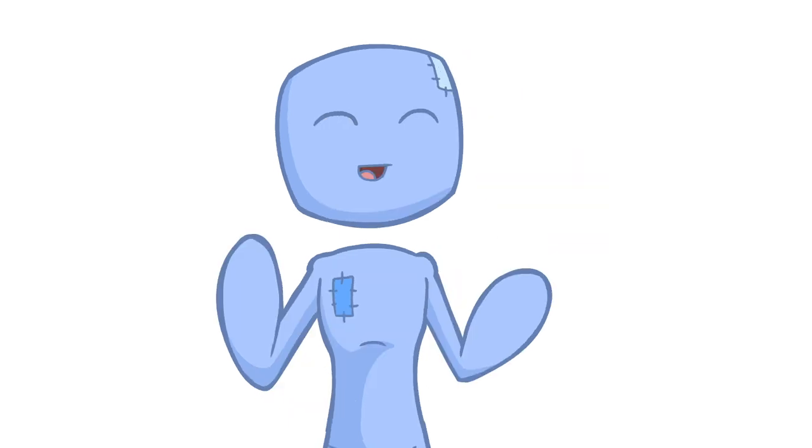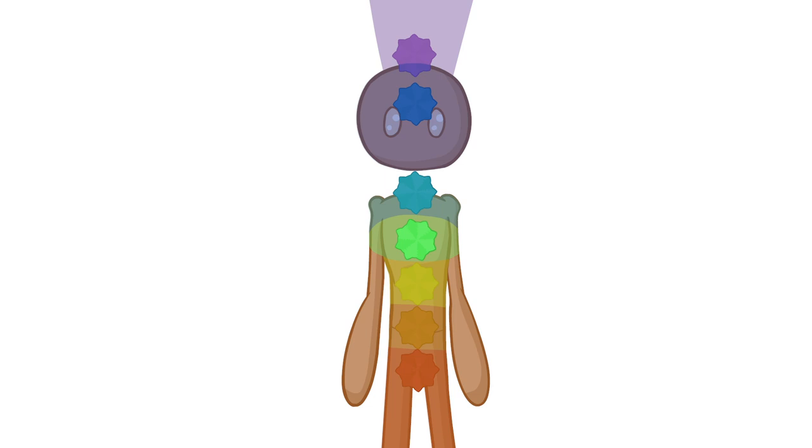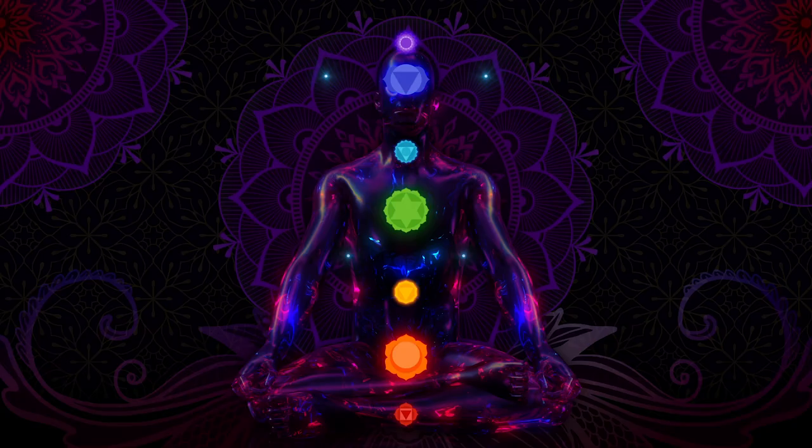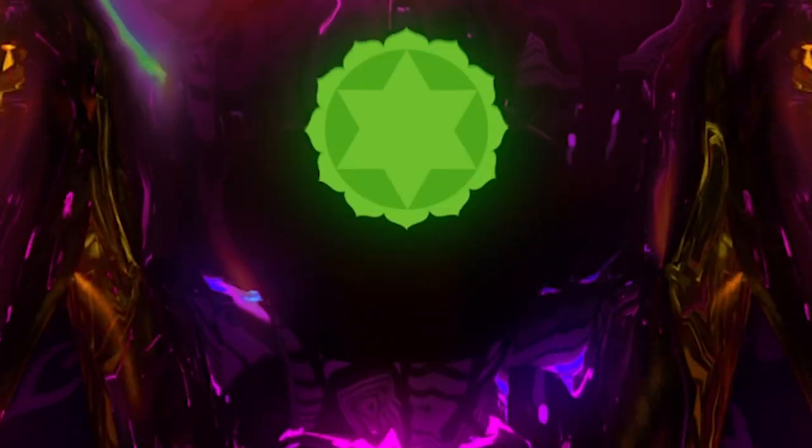As we mentioned earlier, each chakra is connected to an organ or gland, which governs over a section of the body. The order of the chakras is generally thought to go from the bottom up, starting with red and changing vibrations in each chakra until you get to violet.